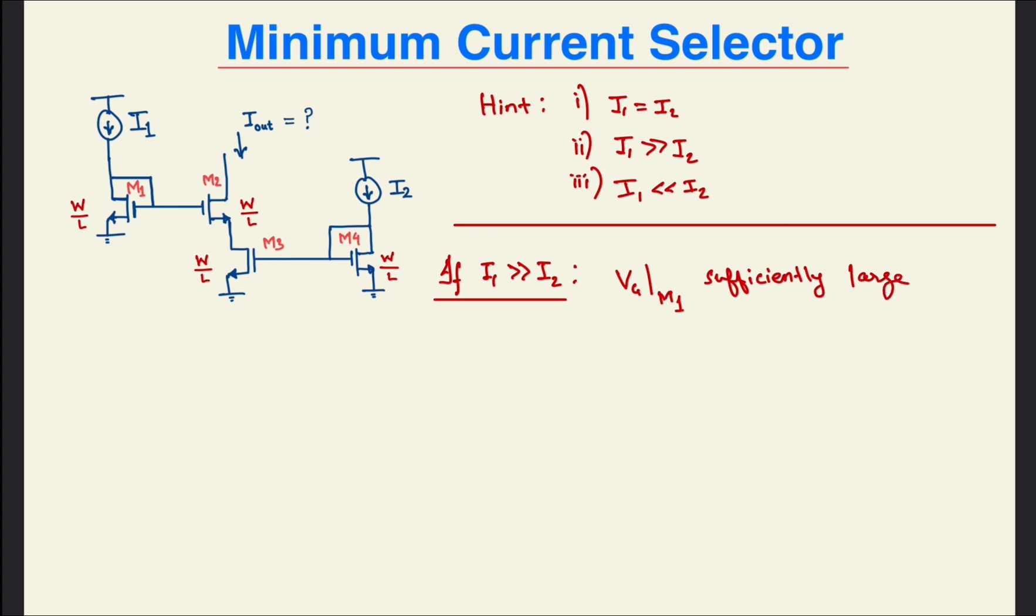So then I looked at the case when I1 is much much greater than I2, with an assumption that all the transistors are in saturation. If we see any contradiction, then we can modify that assumption. So if I1 is sufficiently large, then the Vgs of M1 would be sufficiently large to bias M2 in saturation.